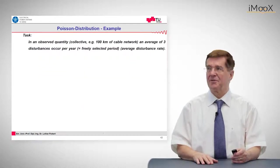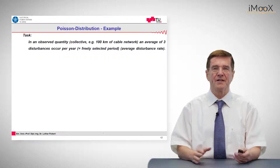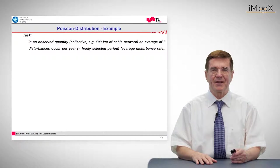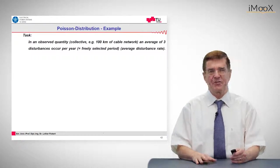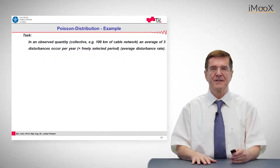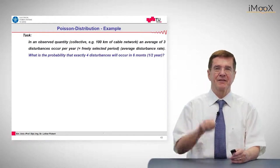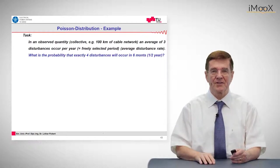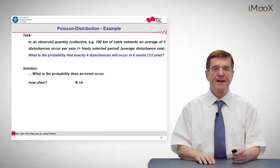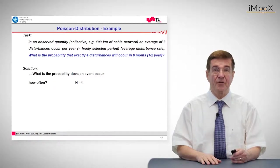Just let's apply this. Let's think that we observe a quantity like a collective of 100 kilometers of cable network expected to have an average of three disturbances per year. The question is, what is the probability that we have exactly four occurrences in half a year? So how often do we want this event? It is four.